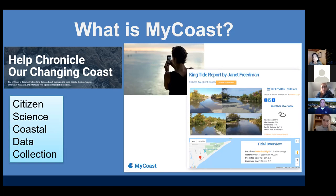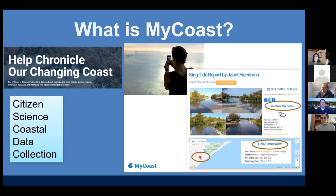Here is a typical report on king tides. You have a location identified and all the information available — look at the title overview. It goes to your closest NOAA tide station, so really good information. It provides weather data, which is really important — did we have winds that day or rainfall? — so that you could go back and analyze this.